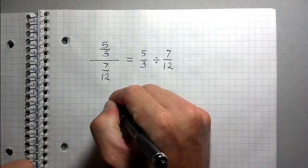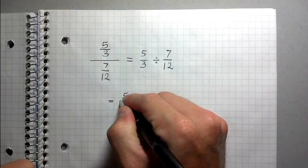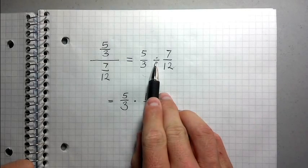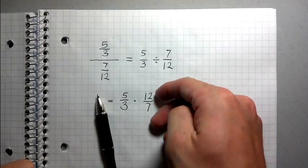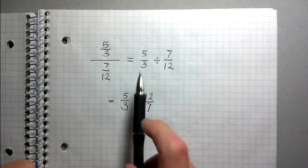So I'm going to rewrite this again. So instead of it being five thirds divided by seven twelfths, it's going to be five thirds times 12 over seven. Because remember, when I divide fractions, I just simply flip the second fraction and turn it into a multiplication sign instead of a division sign.